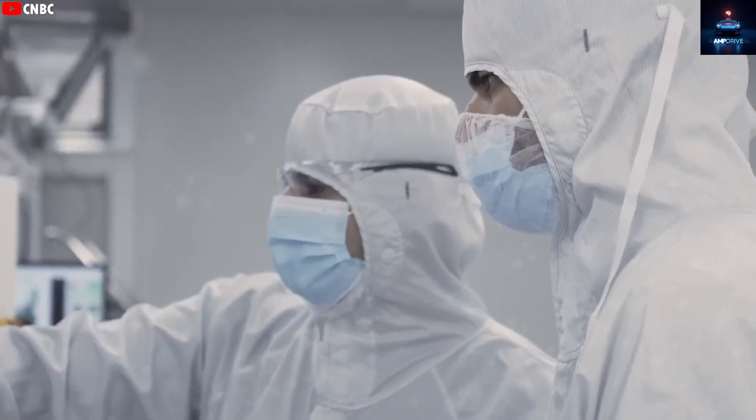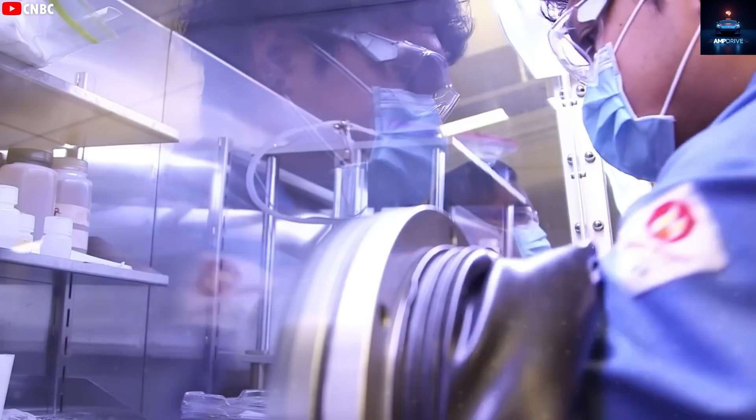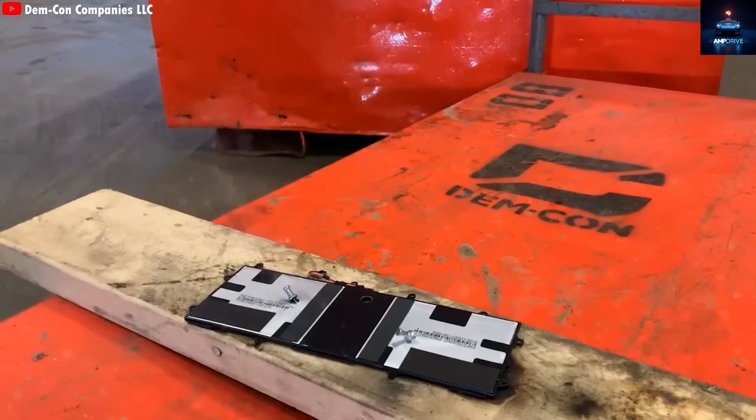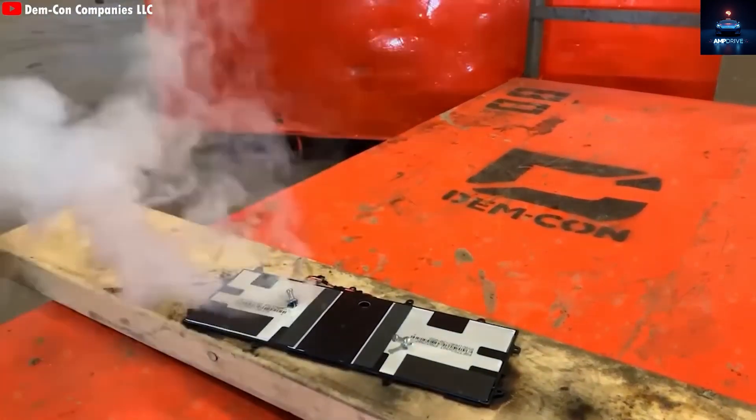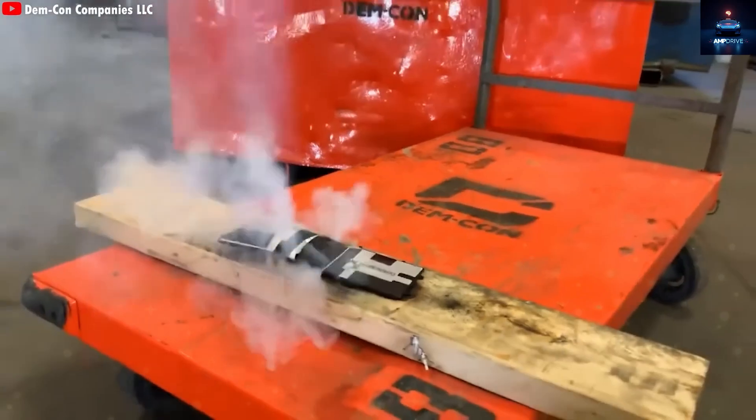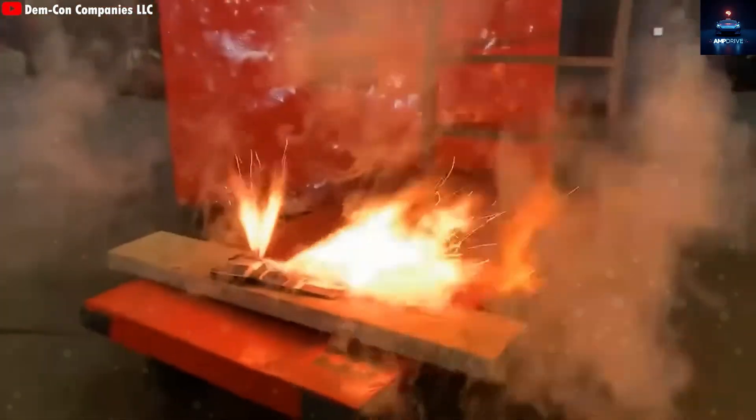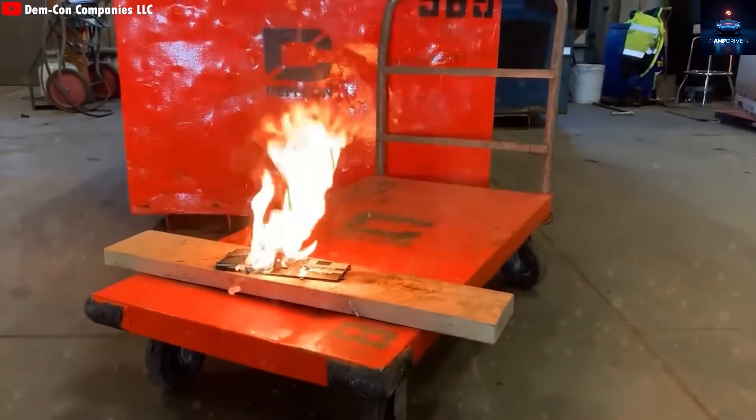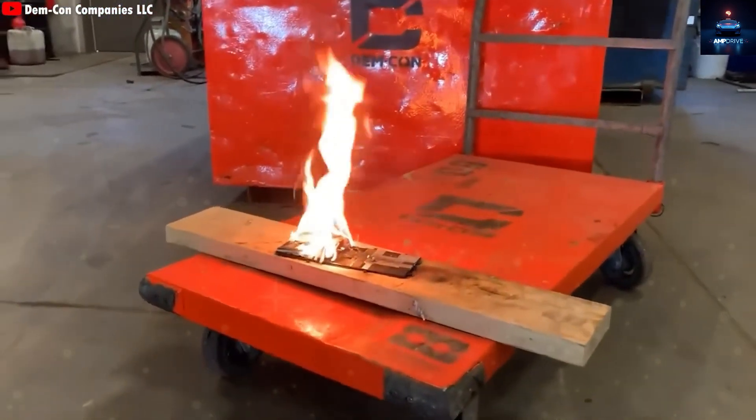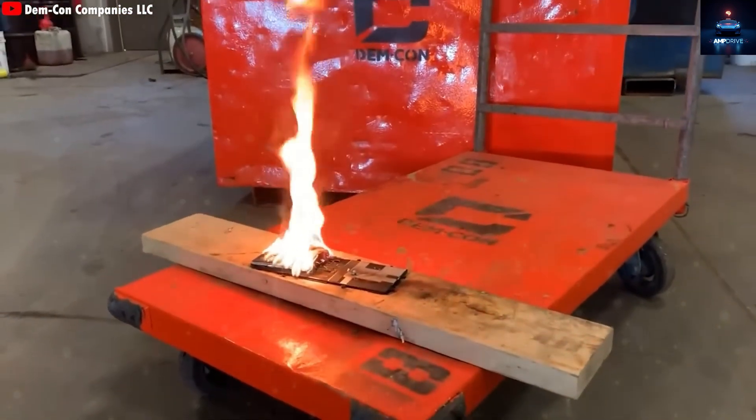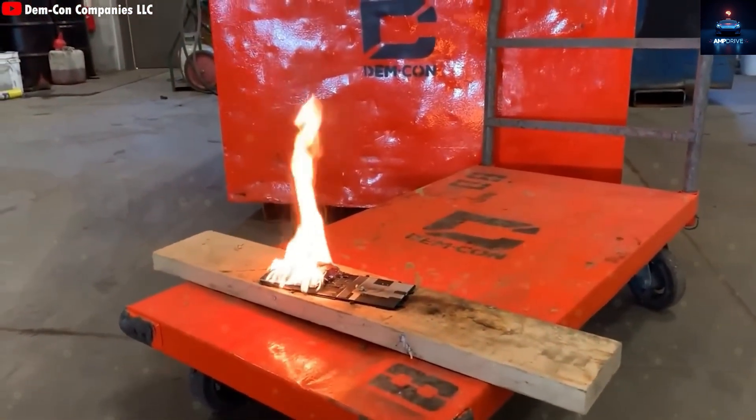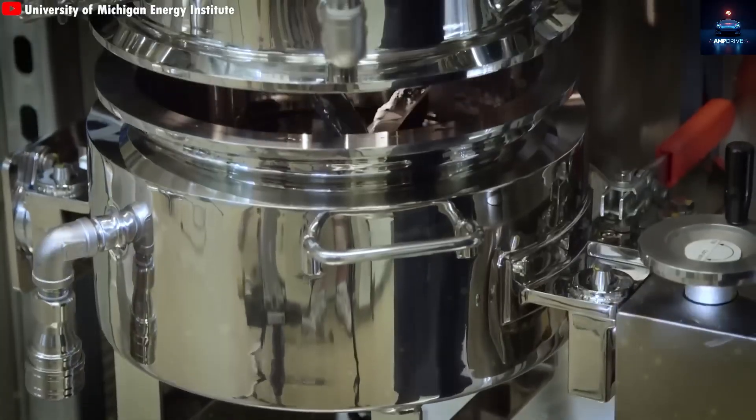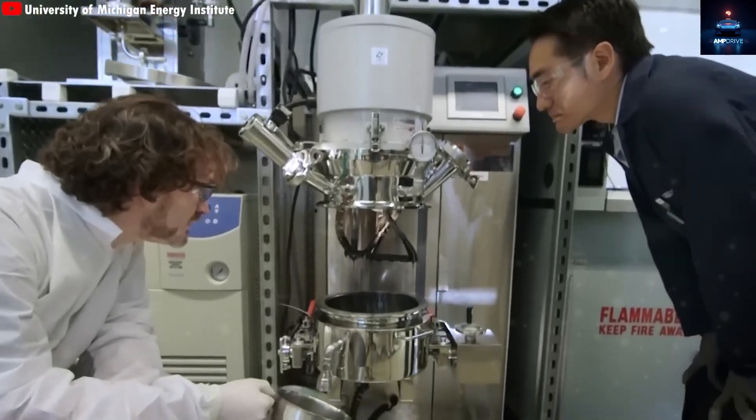Toyota's solid-state batteries offer two clear advantages—better energy density and faster charging. But the cost of making these batteries remains a big problem. Toyota says it has reduced expected costs by 50%, but that only means the cost is half what they thought it would be, not half the cost of current lithium-ion packs. In truth, materials like lithium sulfide cost 5 to 10 times more than lithium carbonate, and the process requires strict humidity control and dust-free rooms, which drives up manufacturing expenses.